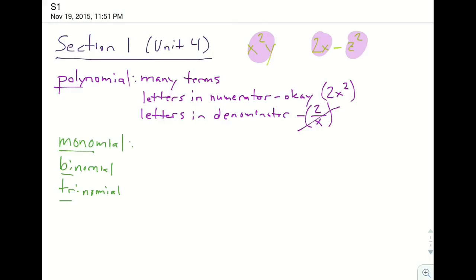Monomial is going to be one term, like mono, by yourself. Binomial, like a bicycle, is going to be two terms. Trinomial, like a tricycle, is going to be three terms. And all of them are polynomials.